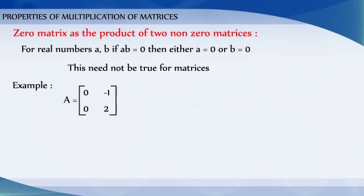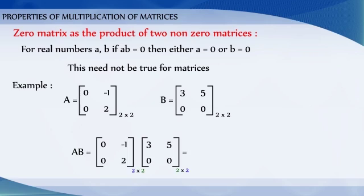let A = [0, -1; 0, 2] be a 2 by 2 matrix and B = [3, 5; 0, 0] be another 2 by 2 matrix. Then, we have the product AB as [0, 0; 0, 0], a zero matrix.